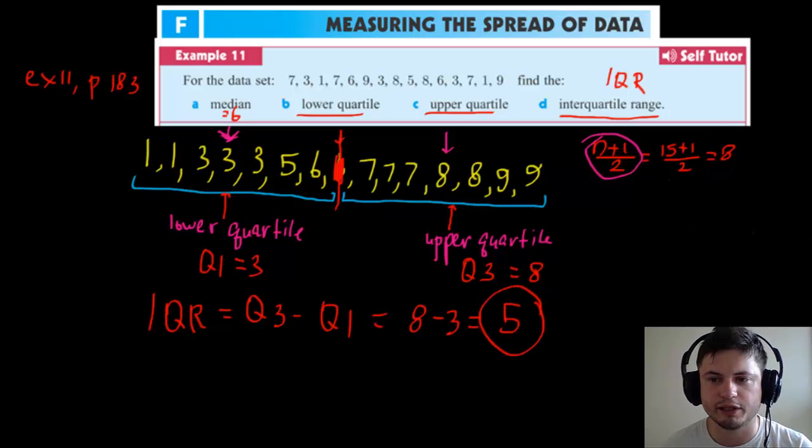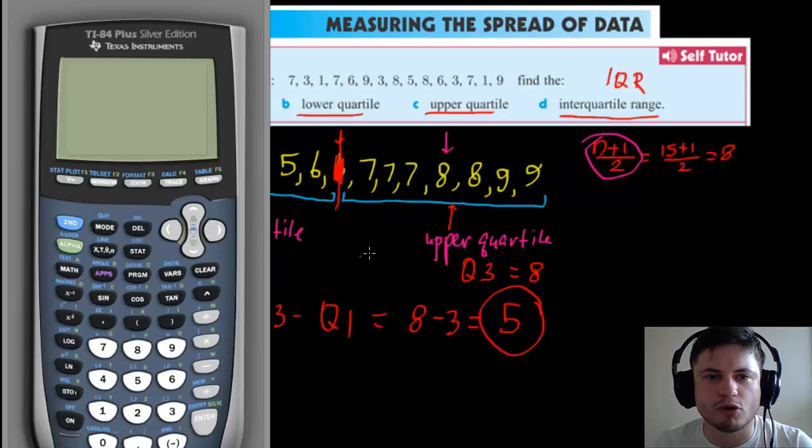is in this data set. The two numbers that we actually need from this data set are the range and the interquartile range. This is the number we're looking for, and this shows us how spread the data is in this data set. Now we're going to do the same problem with the